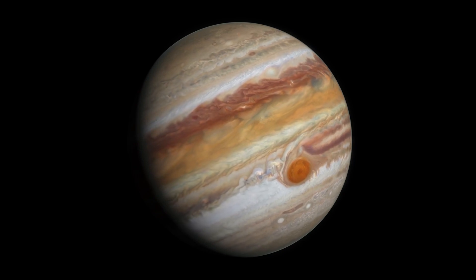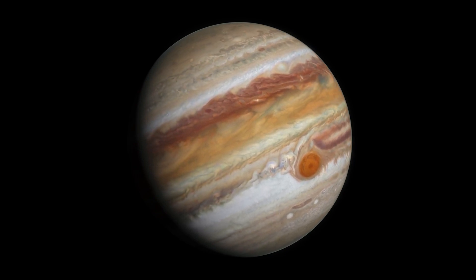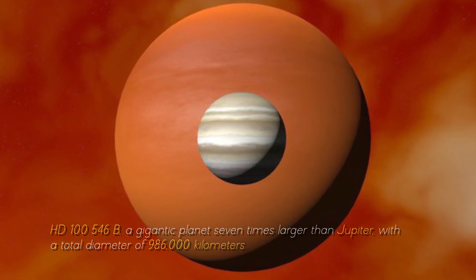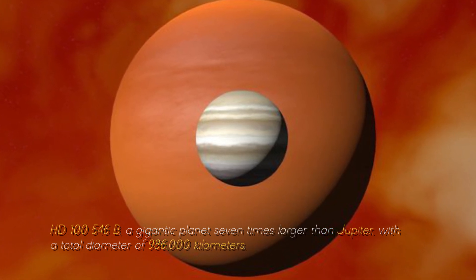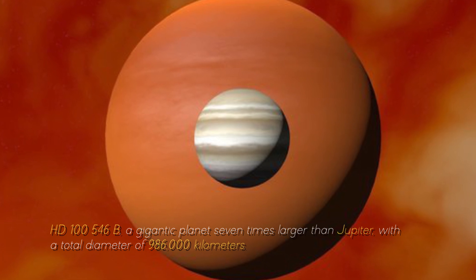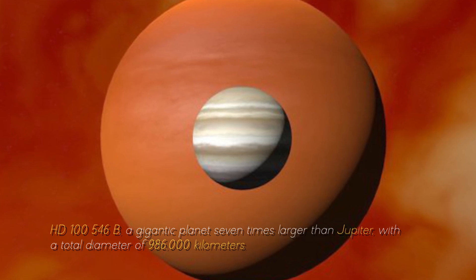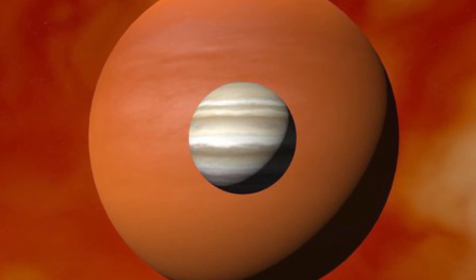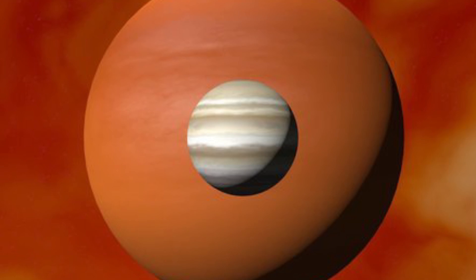Now, let's compare Jupiter with the largest planet in the known universe, HD-10546 b, a gigantic planet seven times larger than Jupiter, with a total diameter of 986,000 kilometers. You can imagine what Earth would look like near this cosmic monster.